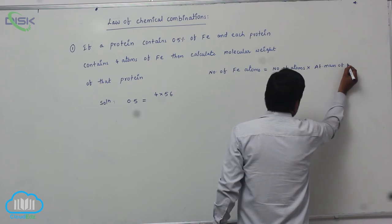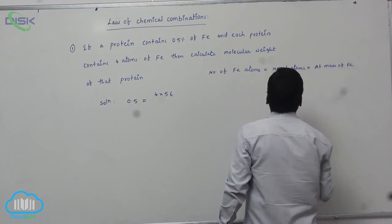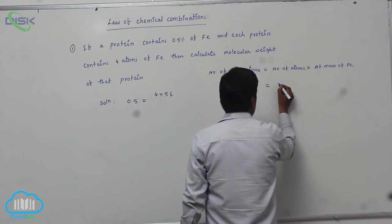Atomic mass of which one? Iron. So therefore this equals to - number of atoms are what? 4 into 56.